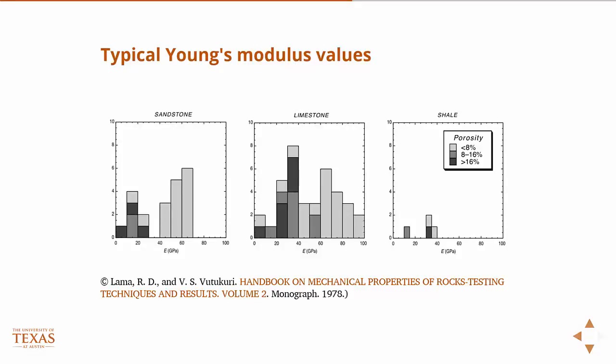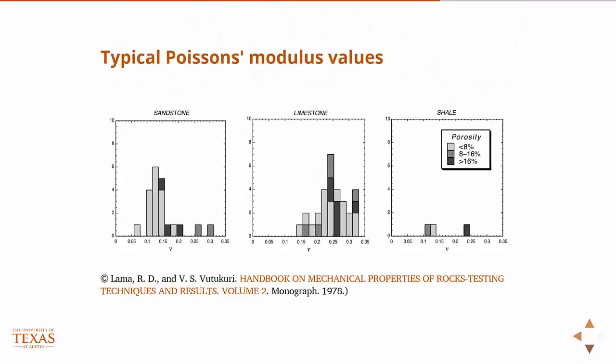So it just gives you a flavor of where, if you just kind of close your eyes and pick up a sandstone, it's going to have, it's likely to have a Young's modulus in the 40 to 60 GPa range. A limestone would be more in the 25 to 65 or 70 range. And there's not a lot of data here on shales. This is an old text.